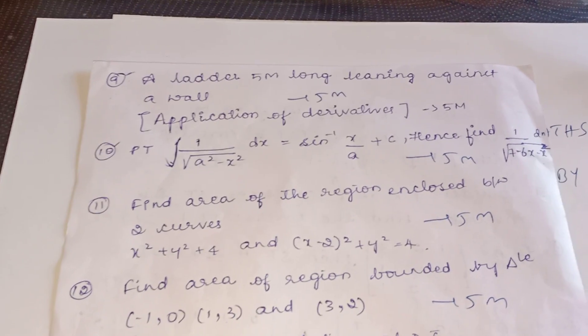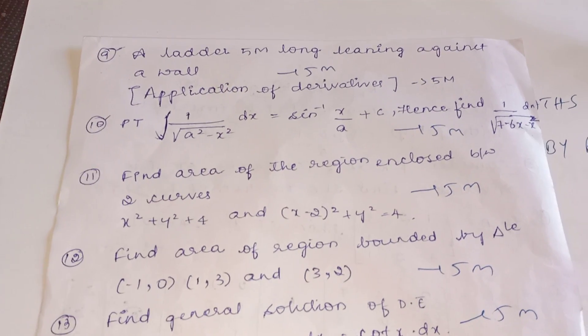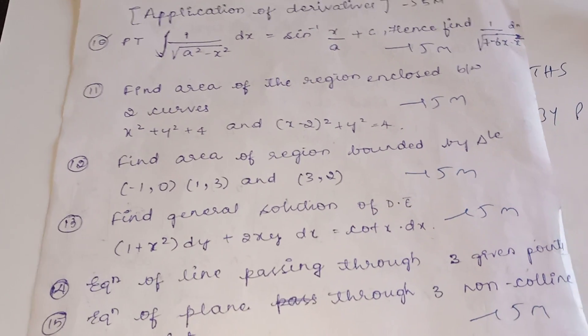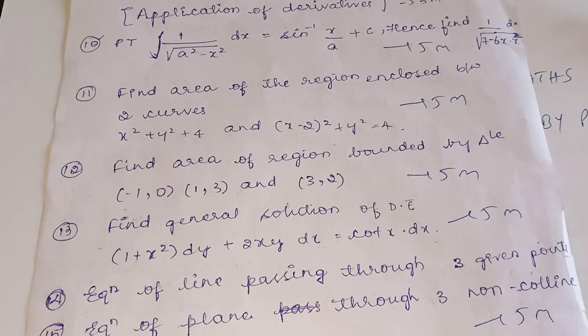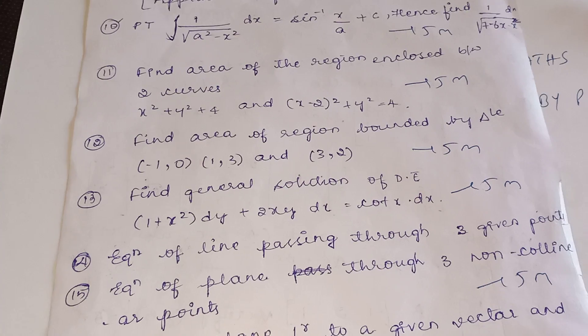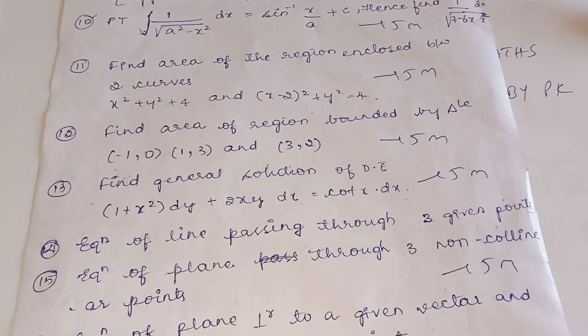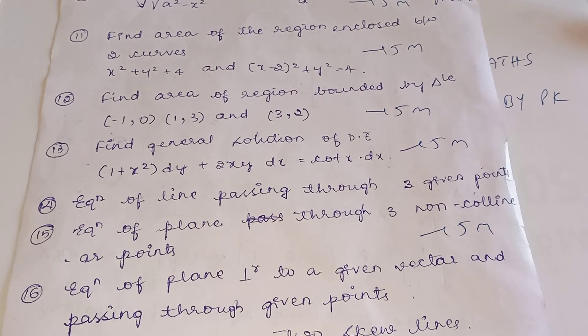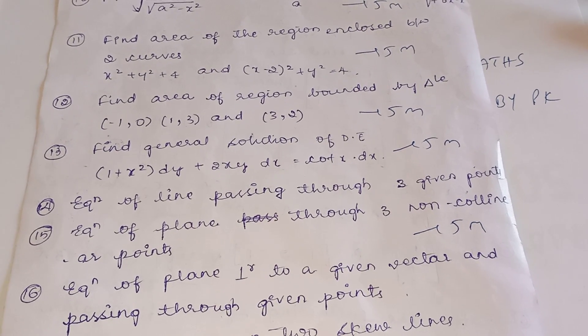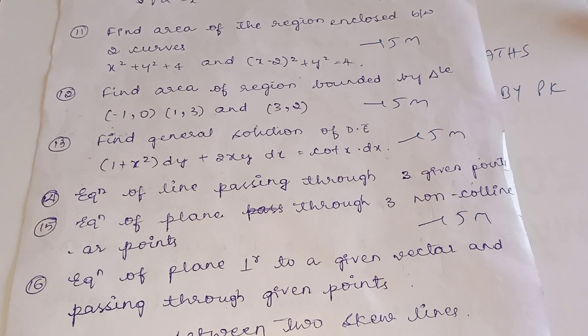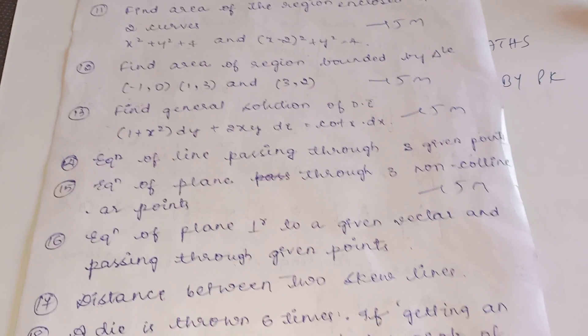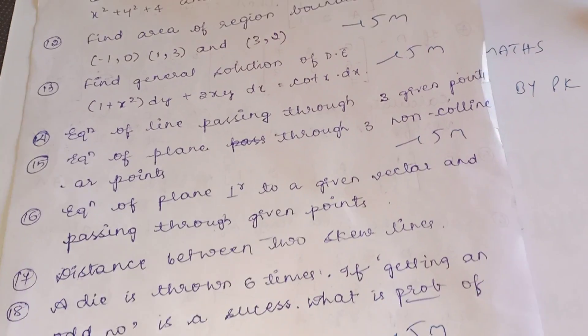And in application of integration, the area of the region enclosed between the two curves, or area of the region bounded by three points. In differential equation, five mark question is: general solution, find the general solution of the differential equation. And in 3D geometry if you come, we have some more derivations also. Equation of line passing through three given points, equation of a plane through the three non-collinear points, or equation of a plane perpendicular to a given vector and passing through a given point. Out of these three, any one will come. Distance between two skew lines maybe question they can ask with proof for five marks.